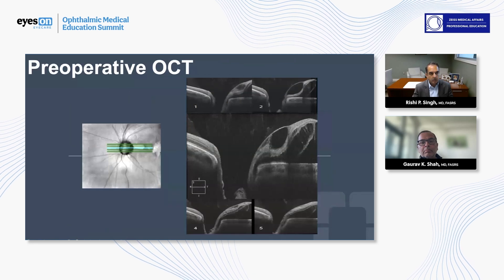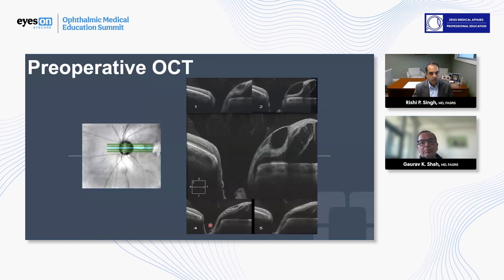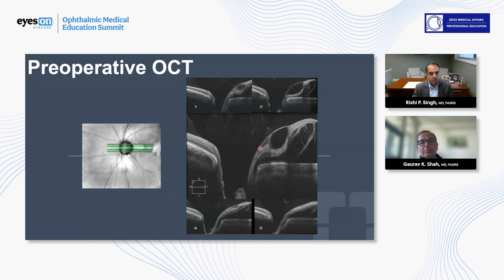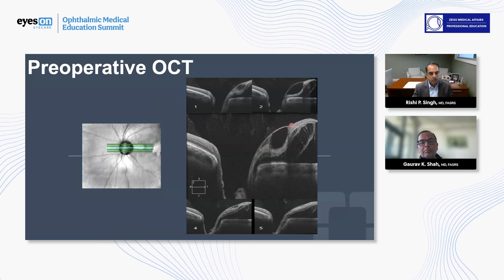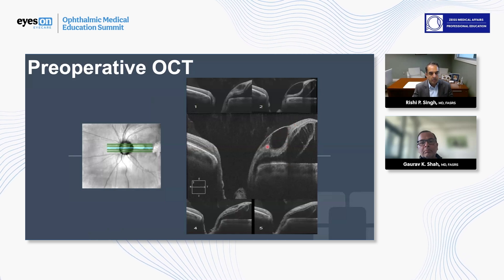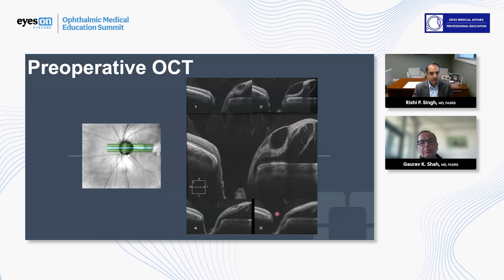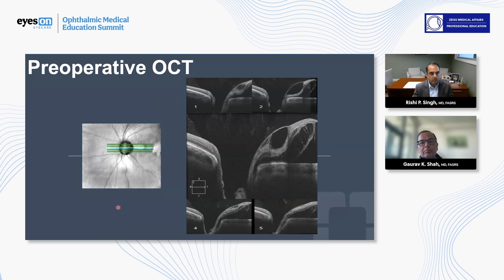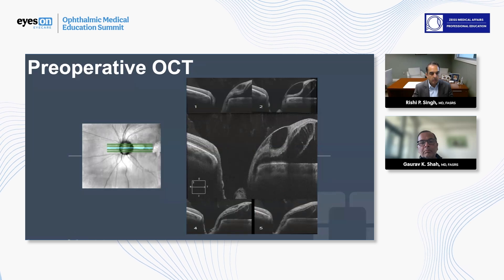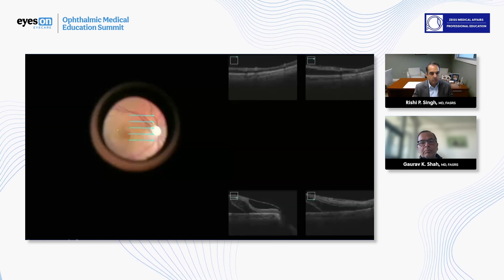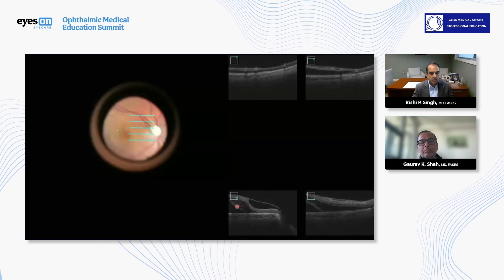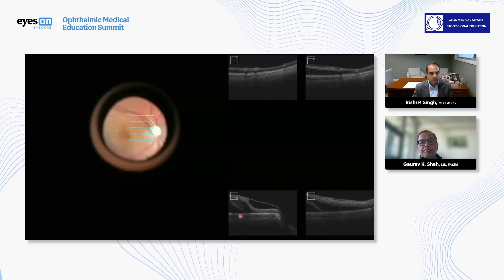This is the actual OCT before surgery. You have this membranous change right here, which may be hyloid, maybe ERM — it's hard to say, but we'll know when we do the surgery. Clearly, you have the macular views showing that retinal change as well. A couple of advanced photographs show there's a very thin retina right over that area.